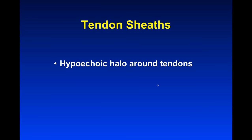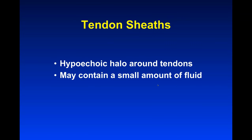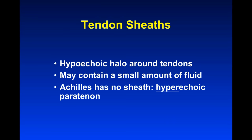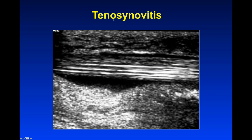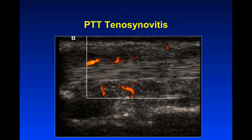Now tendon sheaths — their job is to lubricate the motion of tendons. They appear as a hypoechoic halo around tendons and may contain a small amount of fluid. Some tendons have no sheaths, most notably the Achilles, which instead has a hyperechoic paratenon. Here's an example of tenosynovitis, inflammation of the tendon sheath, at the posterior tibial tendon in the ankle. The fibrillar pattern is slightly hypoechoic but the main abnormality is too much fluid both in front of and behind the tendon. Putting on Doppler shows flow mostly around the tendon — that is tenosynovitis, and in this case it is in fact inflammation, which is why we say itis, and it can be quite painful.